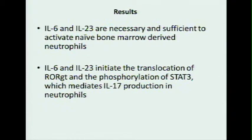Some additional findings — which I won't go into in detail — were how exactly neutrophils were induced to produce IL-17, since normally this protein is produced by T cells. We found that recombinant IL-6 and IL-23 are necessary and sufficient to activate naive bone marrow-derived neutrophils. IL-6 and IL-23 initiate the translocation of ROR-gamma-T and the phosphorylation of STAT-3, which then mediates IL-17 production in neutrophils. So we did identify the mechanism by which IL-17 is produced by neutrophils.